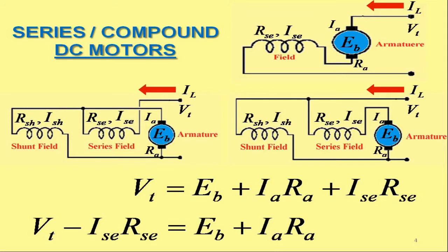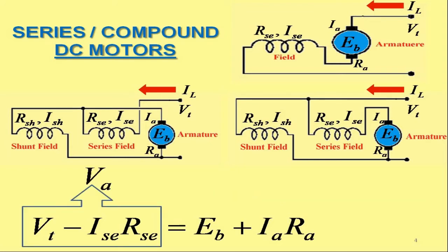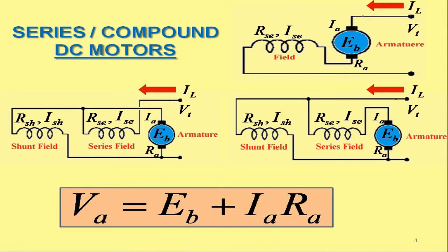However, it is worth mentioning that Vt minus Ise Rse is nothing but the voltage across the armature. Hence, we may also represent the current-voltage relationship for these three motors as Va equals Eb plus Ia Ra.